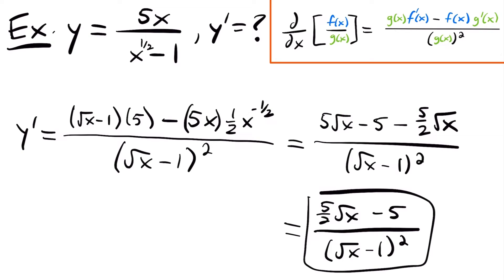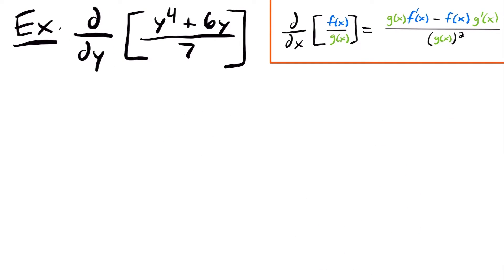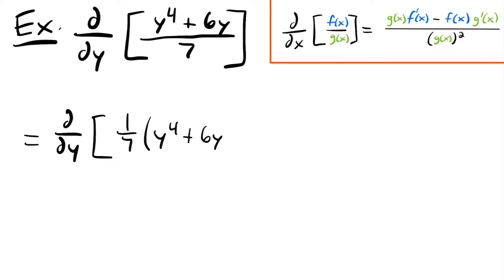Next, let's look at the derivative with respect to y of y to the fourth power plus 6y divided by 7. This one's a little tricky because when you're first learning the quotient rule, your first instinct as soon as you see a fraction is to just use the quotient rule immediately. But you might actually waste some time if you don't first look at what your two functions are. In this case, we have y to the fourth power plus 6y divided by just a constant 7, so we don't really need to use the quotient rule here because there's no variable in our denominator function. We can redefine our function and write the derivative with respect to y as 1/7 times y to the fourth plus 6 times y, which is the same thing.